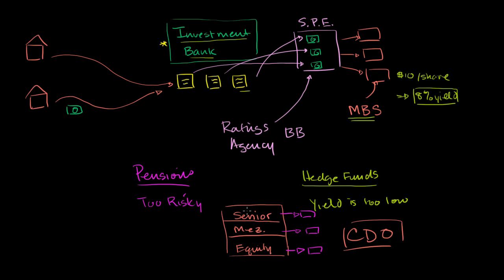Now you might be saying, how does this solve the problem? Well now the ratings agency will say, well look, if the senior people are going to get paid before everyone else, then I'm going to give them a higher rating. And they can even get insurance on this, get a credit default swap, and then maybe they'll give it a triple A rating. Which means that the pensions can now buy the senior rated CDOs.